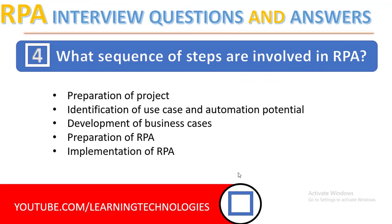Next: what are the sequence of steps involved in RPA? The steps involved in RPA are: one, preparation of project; two, identification of use case and automation potential; three, development of business cases; four, preparation of RPA; and five, implementation of RPA. These are all the sequence of steps involved in RPA.